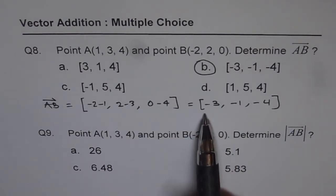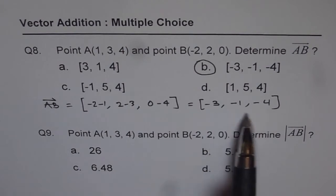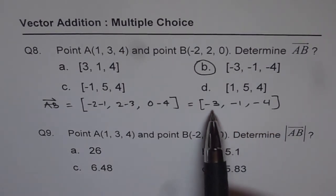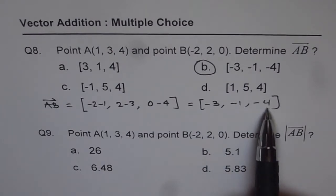So we have already found the vector AB. We will utilize this to find the magnitude. And as you know, magnitude will be A² plus B² plus C², square root.